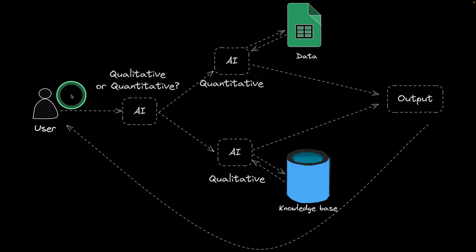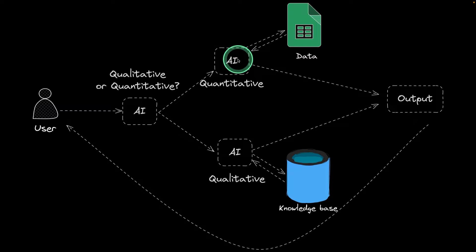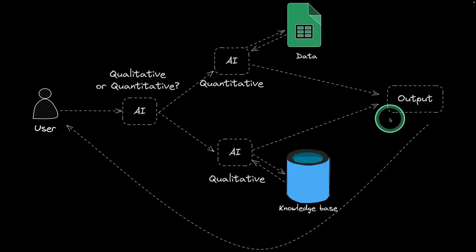When the user asks a question, the AI is going to identify whether it's a qualitative or quantitative question. Based on that, it goes to different routes accordingly. If it's quantitative, it uses natural language to SQL to analyze the data and give the final output. If it's qualitative, it retrieves the data from the database and gives the output, then responds back to the user.